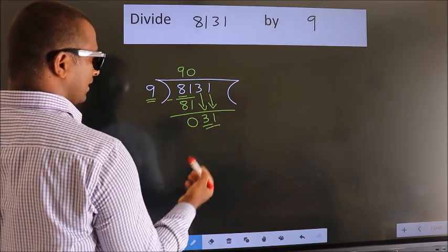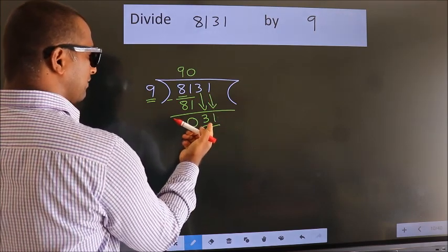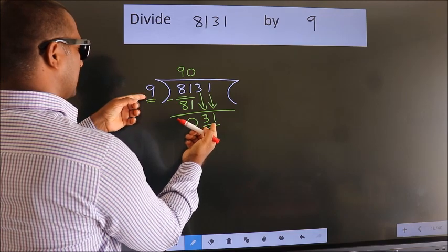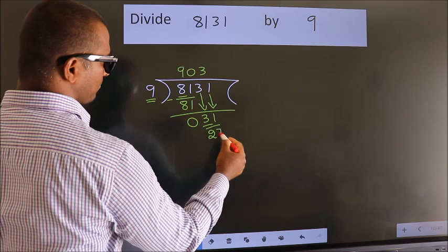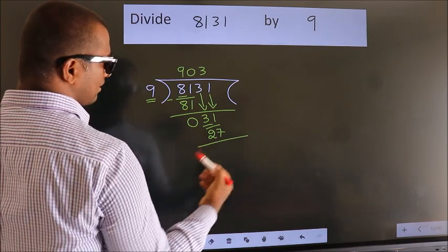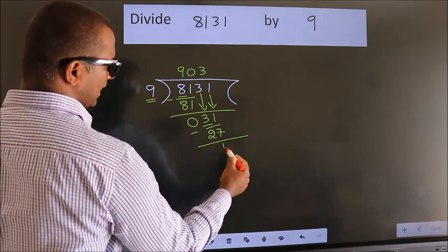So, 31. A number close to 31 in the 9 table is 9 times 3, which is 27. Now, we subtract. We get 4.